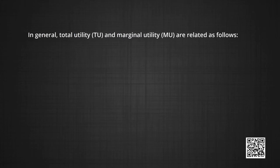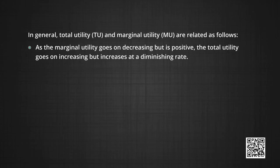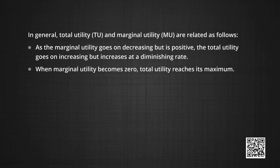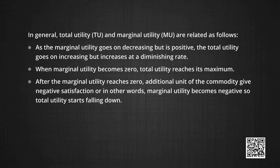In general, total utility and marginal utility are related thus. One, as the marginal utility goes on decreasing, the total utility goes on increasing as long as the marginal utility is positive, but it increases at a diminishing rate. When the marginal utility becomes zero, total utility reaches its maximum. After the marginal utility reaches zero, additional units of the commodity give negative satisfaction — in other words, marginal utility becomes negative, so total utility starts falling.